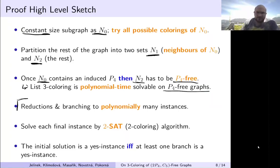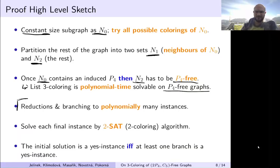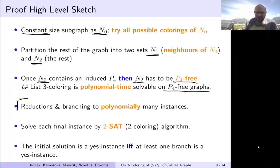Our algorithm is quite standard in this direction — it uses some reductions and branching into polynomially many instances. We start with one instance, branch into polynomially many smaller instances, then reduce and branch again, keeping the whole time complexity polynomial. The end instances are either 'no' instances or the most complicated ones can be encoded to SAT or to coloring. We can then solve 2-coloring in polynomial time, and the original instance is a 'yes' instance if and only if at least one branch is a 'yes' instance.